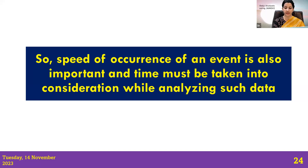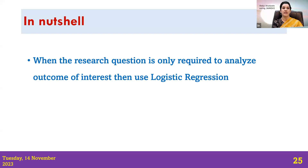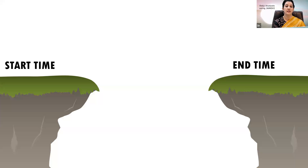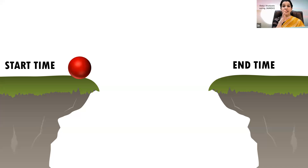To summarize: when the research question is to analyze only a binary outcome, we use logistic regression. When the research question requires analyzing the outcome as well as the time associated with it — that is, time-to-event data — we use survival analysis. In survival analysis we must have a start point, an end point, and a time scale. Not everyone's start point is the same, since recruitment spans a period and follow-up duration varies per individual.